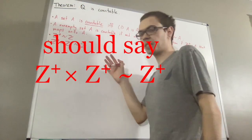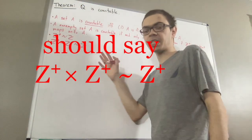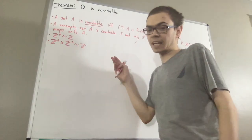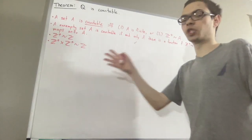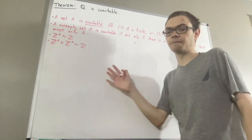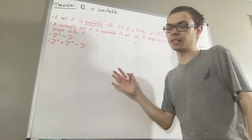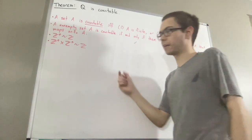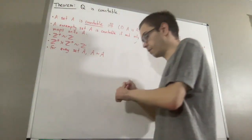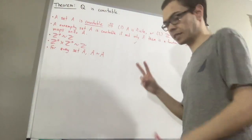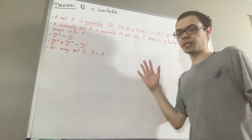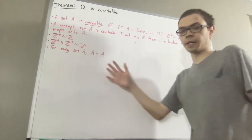Some properties about bijections: given any set A, there is a bijection from A to A — for example, the identity function on A is a bijection from A to A. Given any two sets A and B, if there is a bijection from A to B, then there is a bijection from B to A.